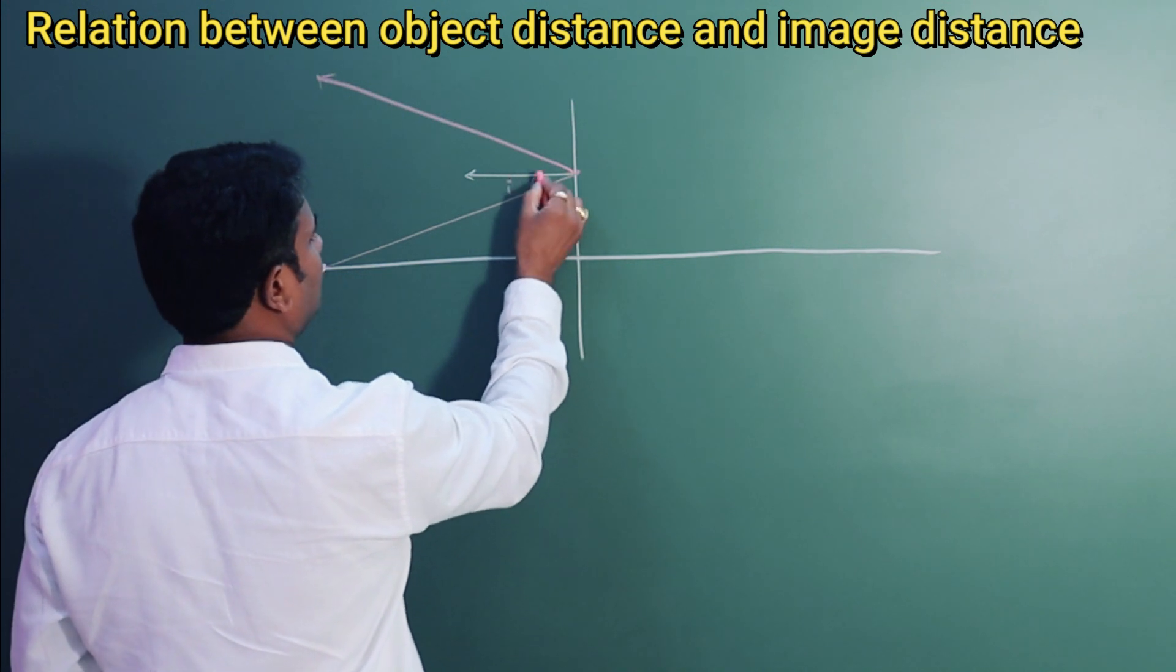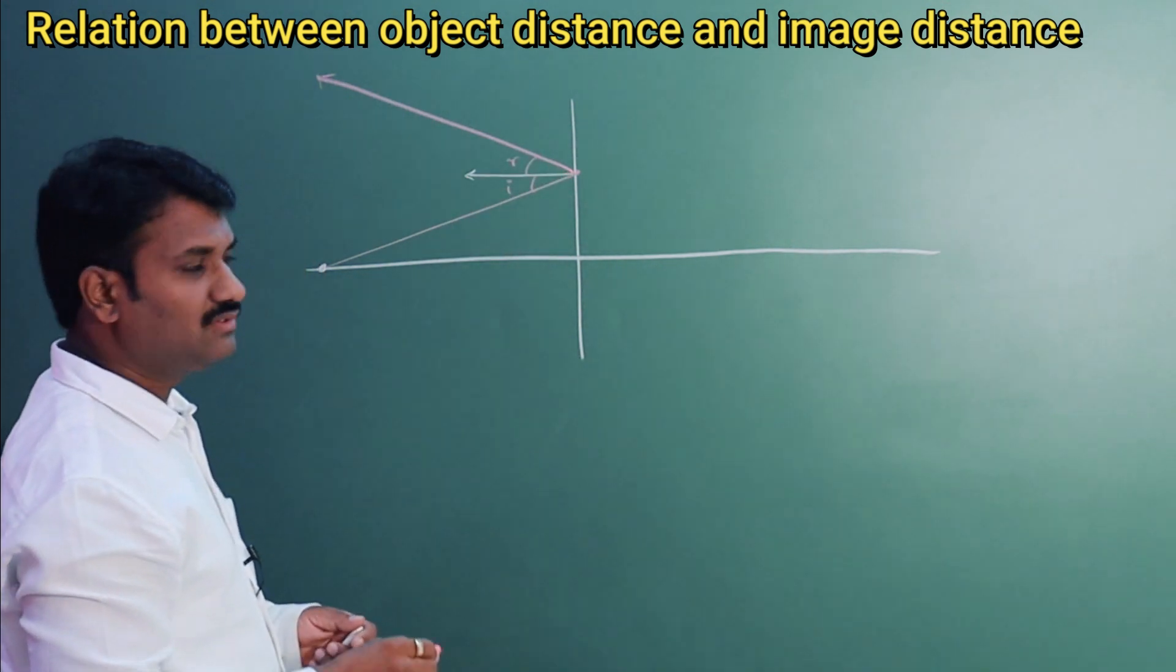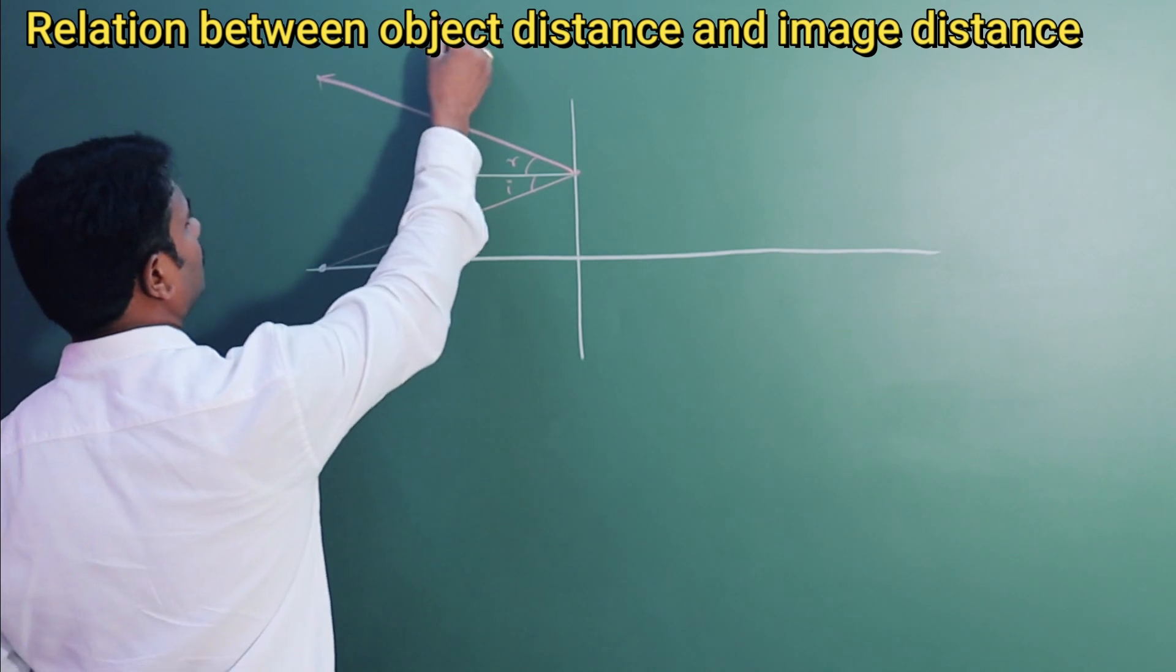So this is the angle of incidence I. This is the angle of reflection R. As we know, I is equal to R.